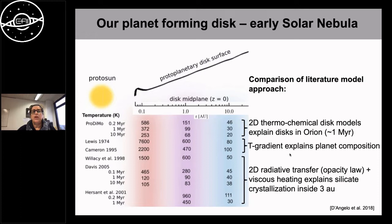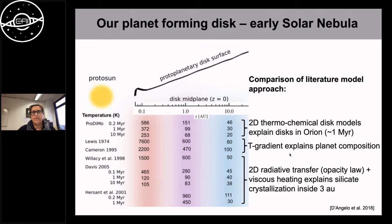Various approaches try to connect the astrophysical disk picture with the solar nebula. The older empirical models by Lewis and Cameron from 1974 and 1995 simply looked at the temperature gradient needed in the early solar system to explain the differences in planet composition from Mercury to Mars. We can also take the astrophysical view and model the observed emissivity in disks as a function of position to derive temperature gradients and understand disk evolution.